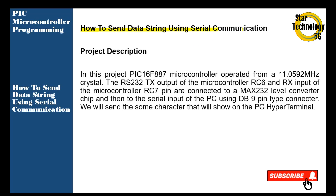Project description: In this project, the PIC16F887 microcontroller is operated from an 11.0592 MHz crystal. The RS232 TX output of the microcontroller RC6 and RX input RC7 pins are connected to a MAX232 level converter chip, and then to the serial input of the PC using a DB9 pin type connector. We will send some characters that will show on the PC HyperTerminal.